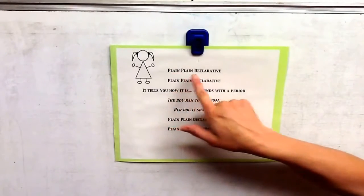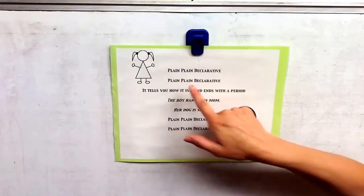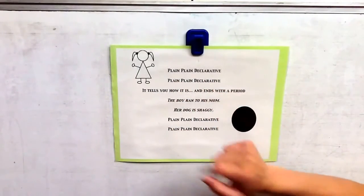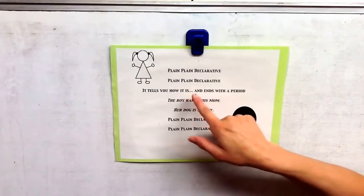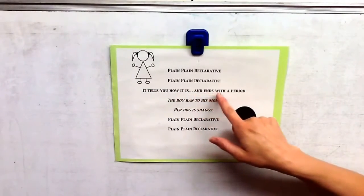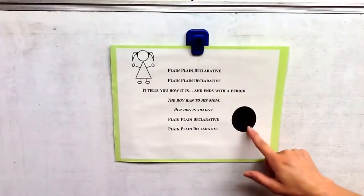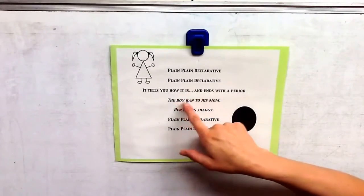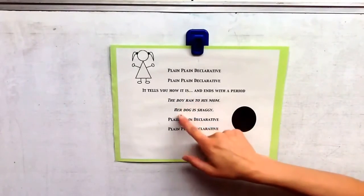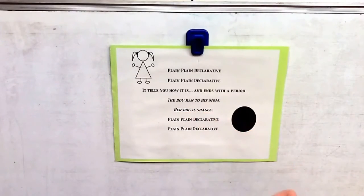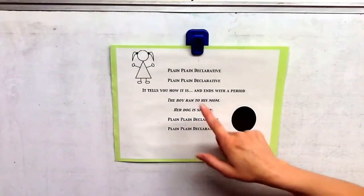Plain, plain declarative. Plain, plain declarative. It tells you how it is and ends with a period. This right here is a period. The boy ran to his mom. Her dog is shaggy.